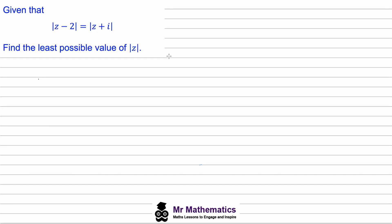Hi everybody, this is the fourth video in my series on solving locus problems with complex numbers. In this example we're given that the magnitude of z minus 2 is equal to the magnitude of z plus i.